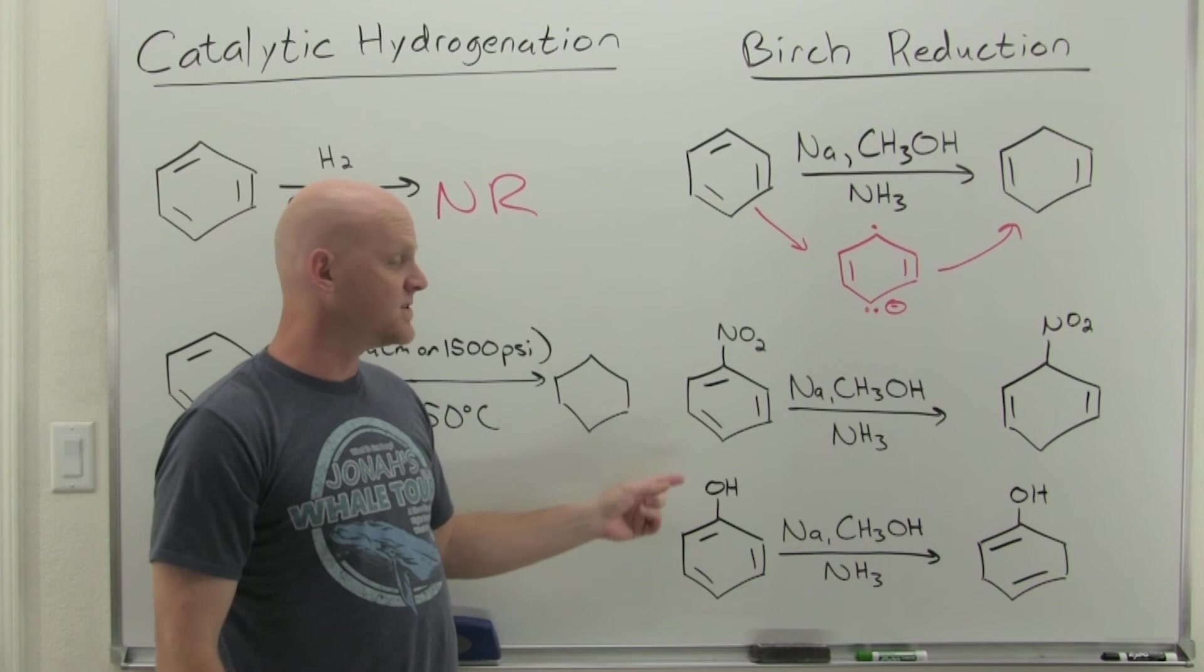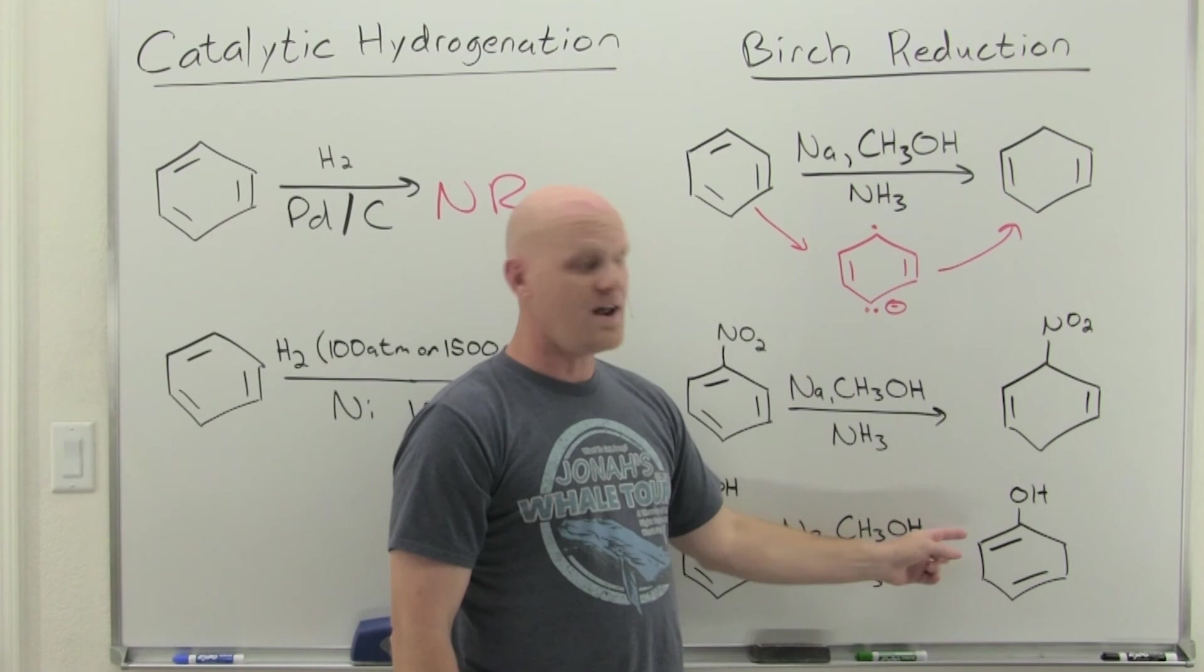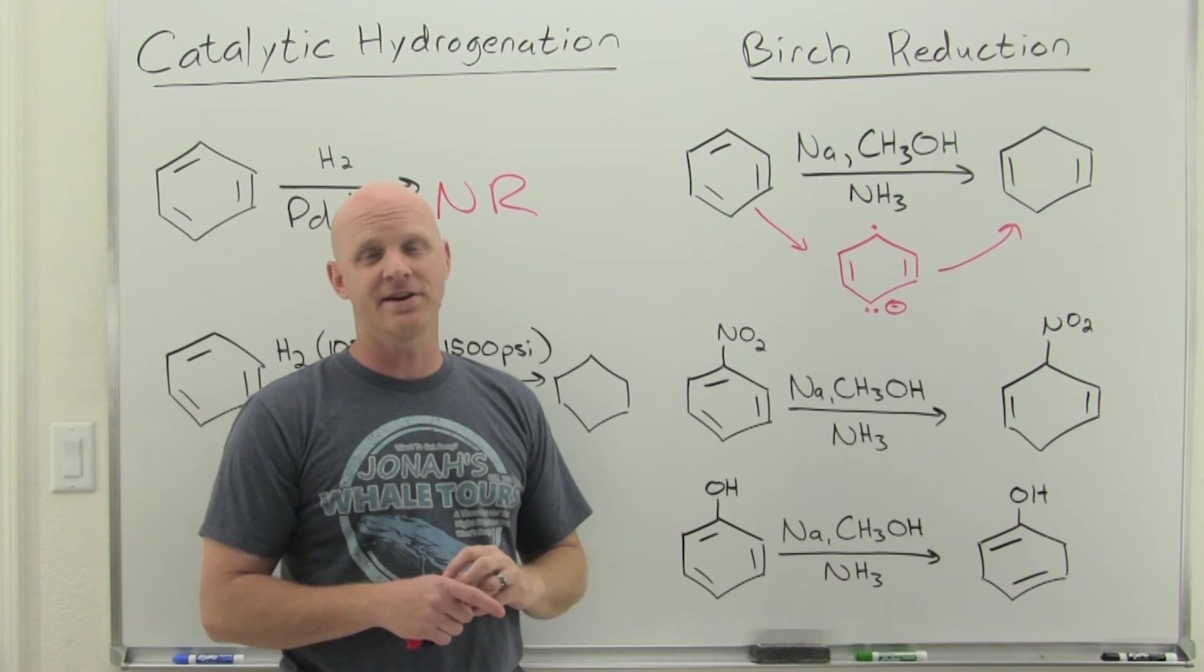And so that's kind of the big thing to remember here is depending on if you've got an electron withdrawing group versus an electron donating group. So the reduction takes place adjacent to withdrawing groups, but not to donating groups, all based on whether they stabilize or destabilize this radical anion intermediate.